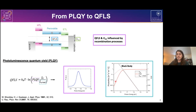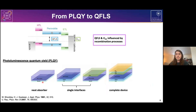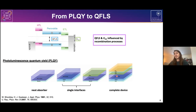The beauty of this technique is that it's a fully optical characterization method. We can access the quasi-Fermi level splitting without necessarily having a full device stack — we can measure the neat absorber in contact with glass, or in contact with either the HTL or ETL interface to disentangle recombination contributions from the two interfaces, or in a full device stack. We will use this approach quite extensively.